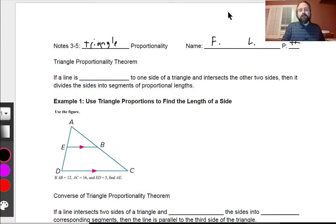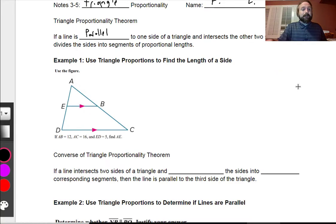So this is the Triangle Proportionality Theorem. If a line is parallel to one side of a triangle and intersects the other two, then it divides the sides into segments of proportional lengths. Well, what does this mean? Let's look at example one.